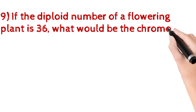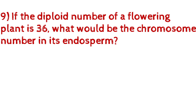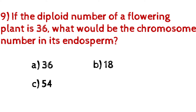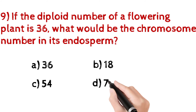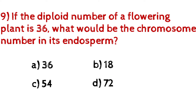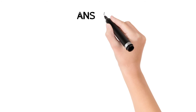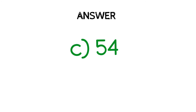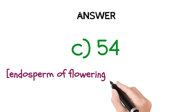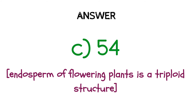Question number nine: if the diploid number of a flowering plant is 36, what would be the chromosome number in its endosperm? A) 36, B) 18, C) 54, D) 72. And the answer is C) 54, because the endosperm of flowering plants is a triploid structure.